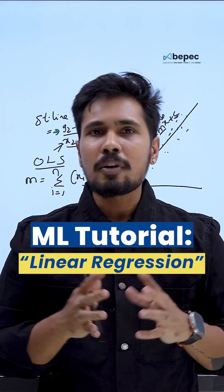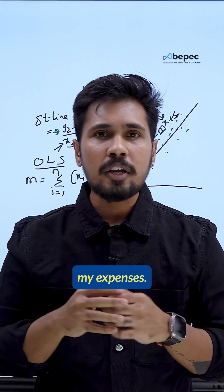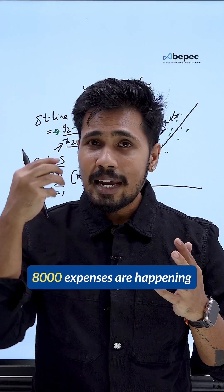Every month I'm spending my money. How much money am I spending? Let's say if I'm getting a 10,000 salary, I'm spending 8,000 on my expenses. If I look at what are my expenses, all my expenses, this 8,000 in expenses are happening due to groceries.